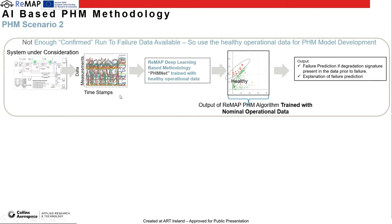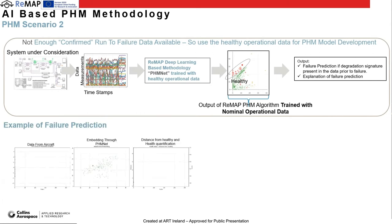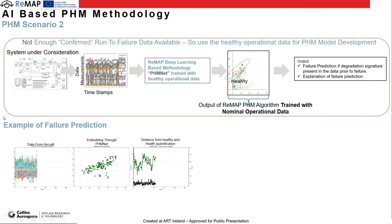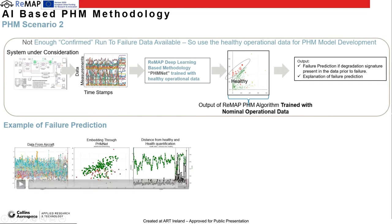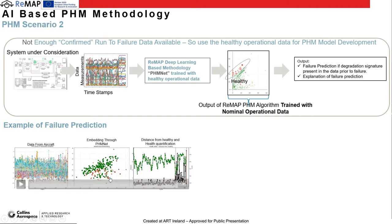If we deploy this framework in the field, the PHM Net embeds the time series data into a two-dimensional space where small green dots represent healthy operation. When something fails, the embeddings move away from the healthy region. We also see similar characteristics in the distance-from-healthy measure of the dots, and the health card shows a similar deviation from nominal operation. Based on this deviation from nominal operation, we can predict that something is going to fail.